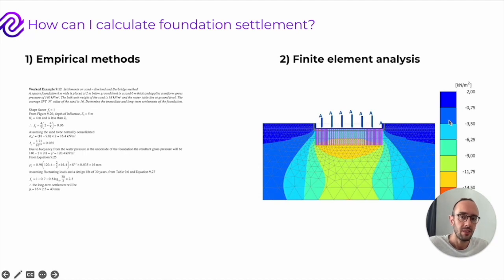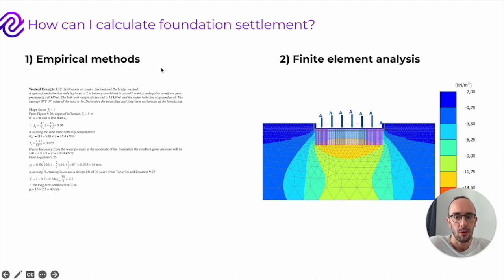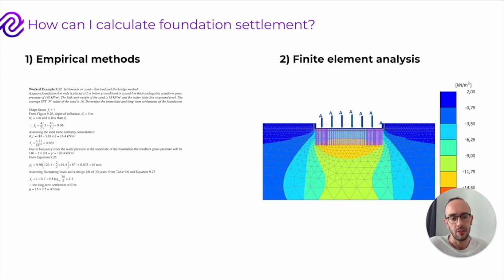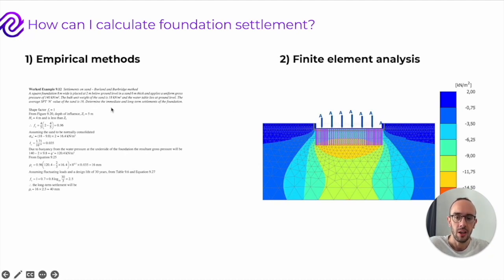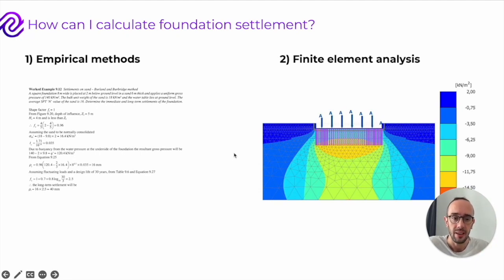So how do you calculate foundation settlement? There are two main ways. You can either use empirical methods or closed-form calculations, where you use mathematical equations and historical correlations and trends in data from past projects for different ground conditions and geometries, to predict what kind of settlement you might find.